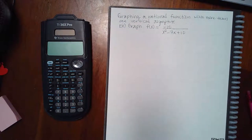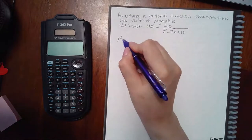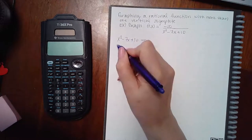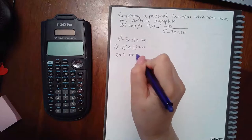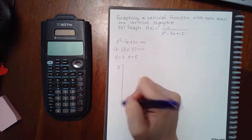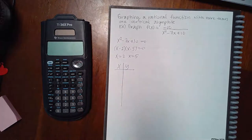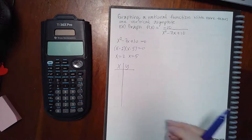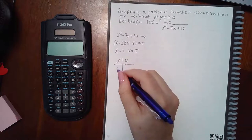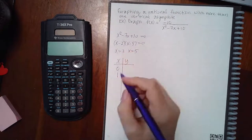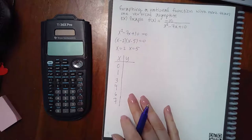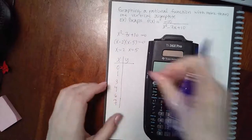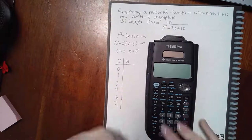Now let's graph a rational function with more than one vertical asymptote. Set the denominator equal to zero to find two vertical asymptotes. Pick numbers to the left of the first asymptote, in between them, and to the right of the second — for example, 0 and 1 to the left of 2, then 3 and 4 in between, then 6 and 7 to the right of 5.